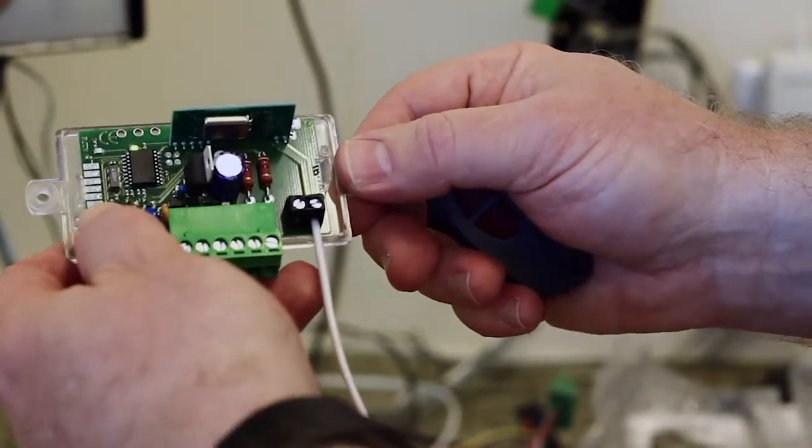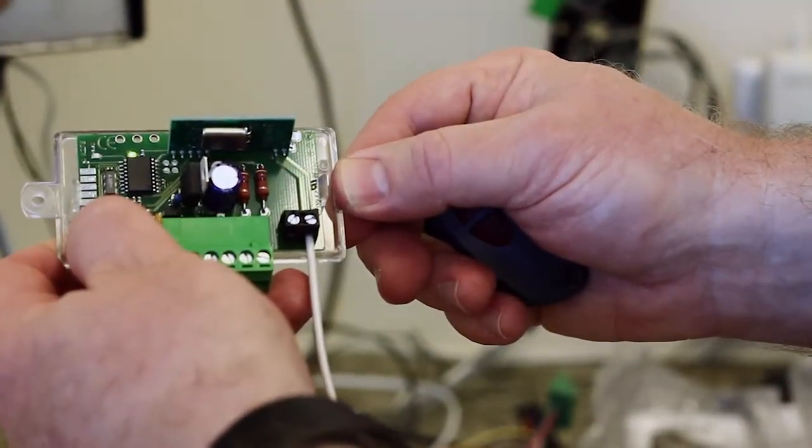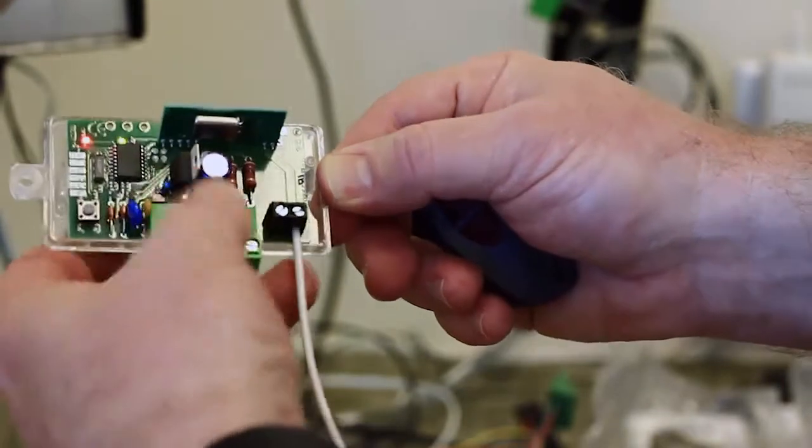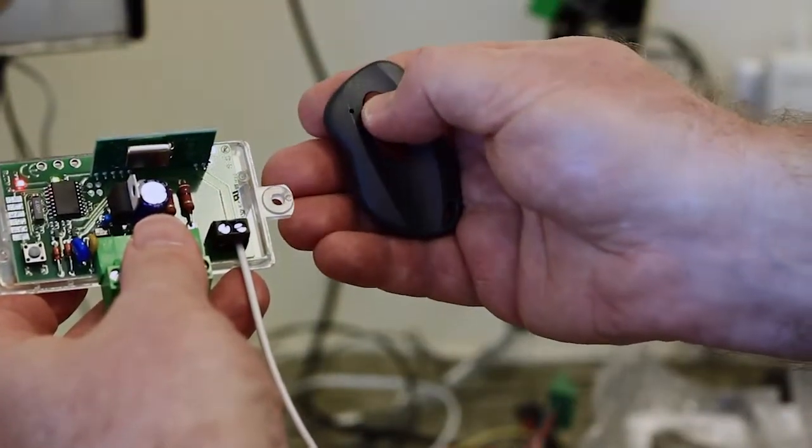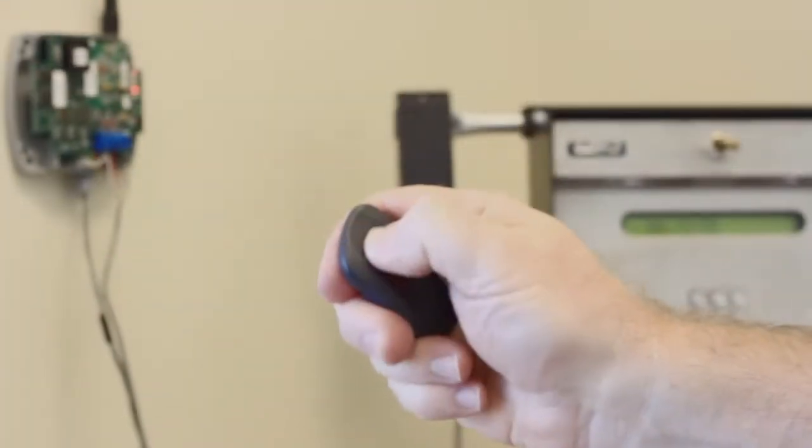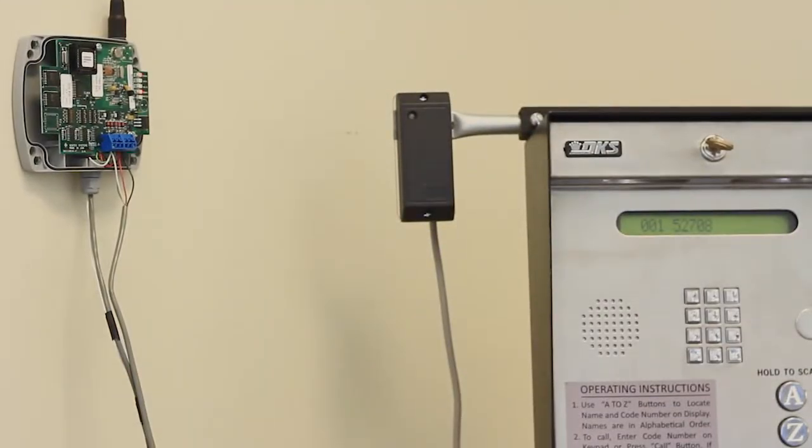Press the programming button and the LED indicator will turn on. Then press down on the transmitter button. The LED indicator will flash. The transmitter is now added to the system as well as the facility code.